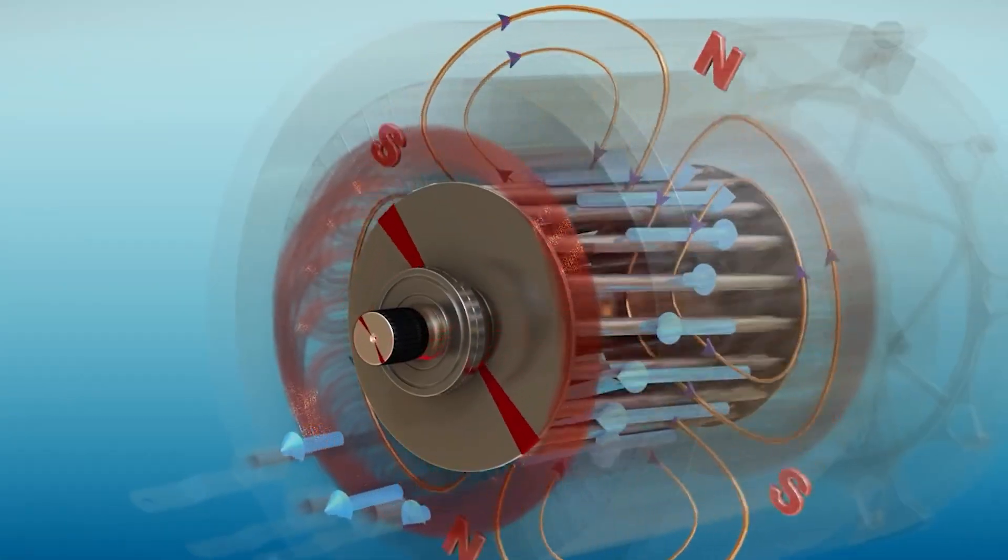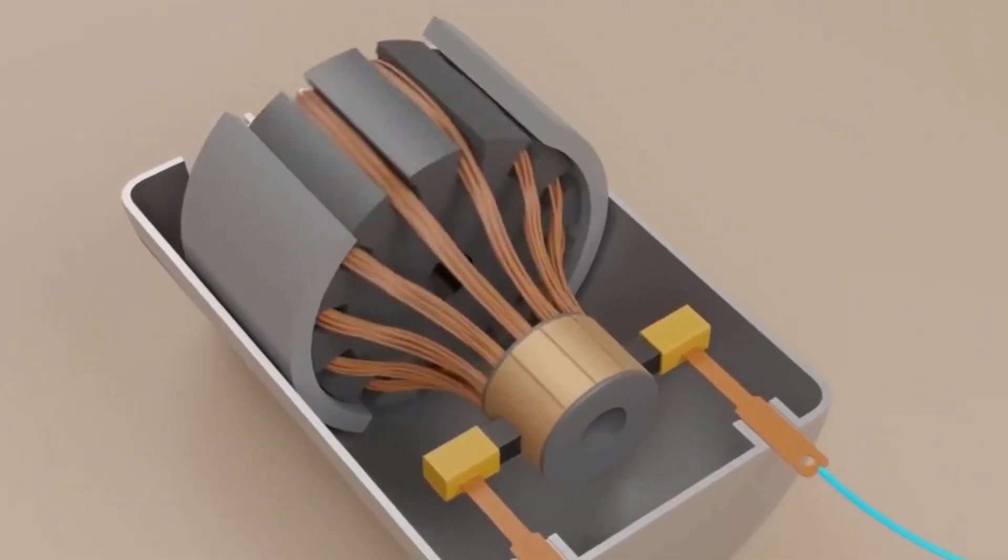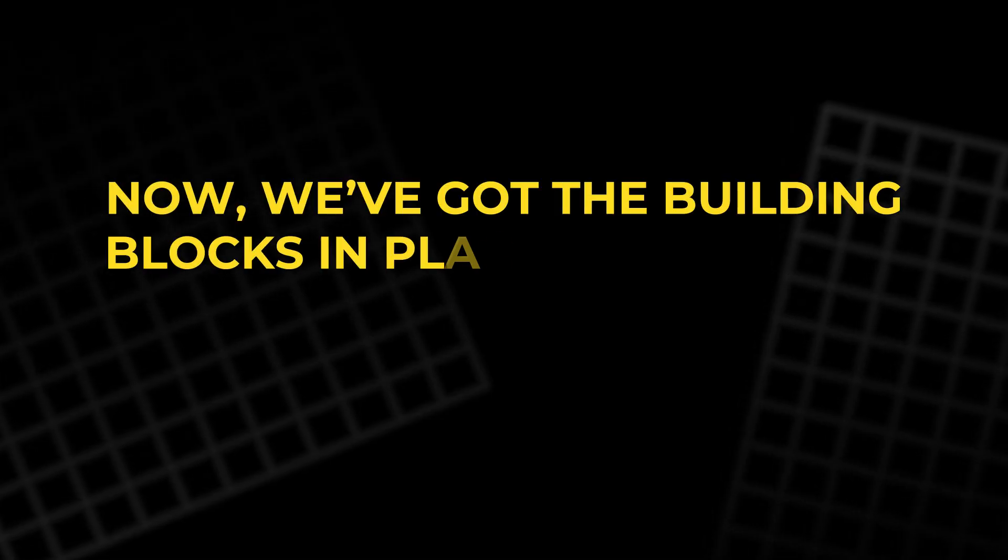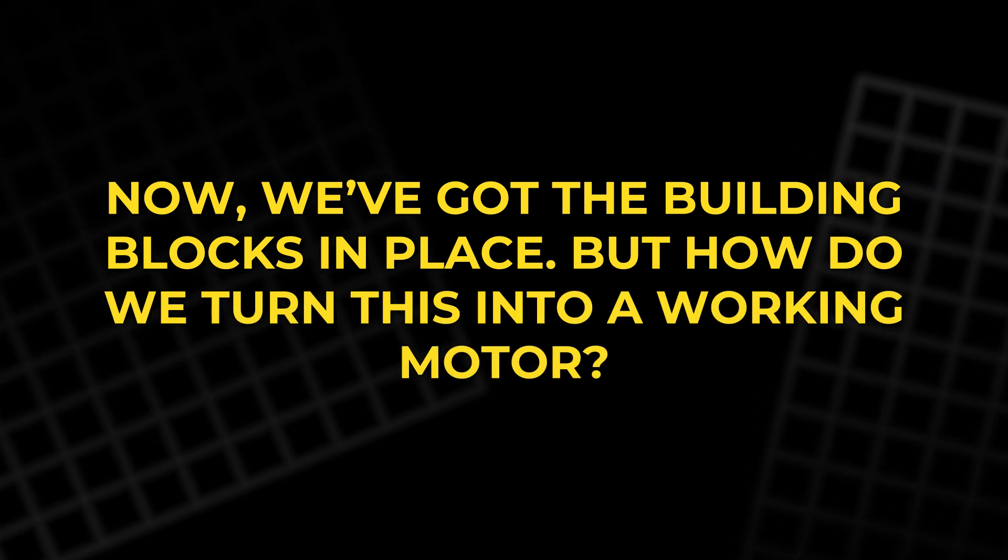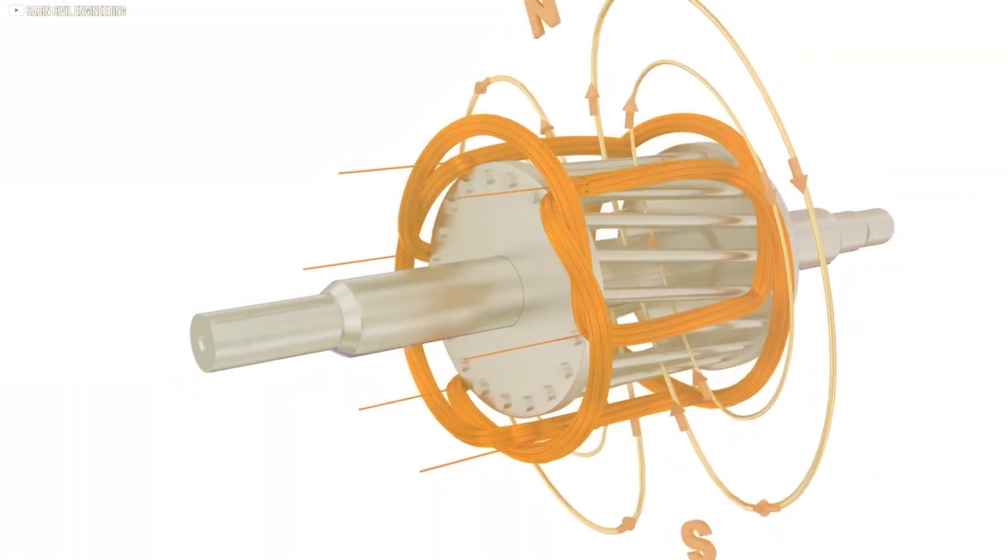The electromagnet keeps spinning, constantly attracted and repelled by other magnets, creating motion. Now we've got the building blocks in place. But how do we turn this into a working motor? Let's take a closer look at how we can make the spinning motion continuous.